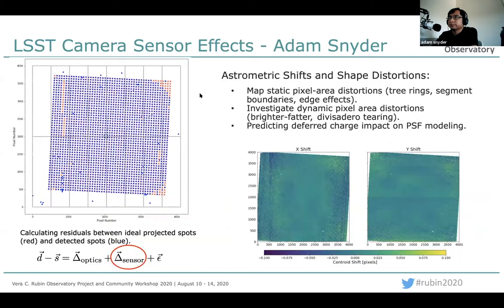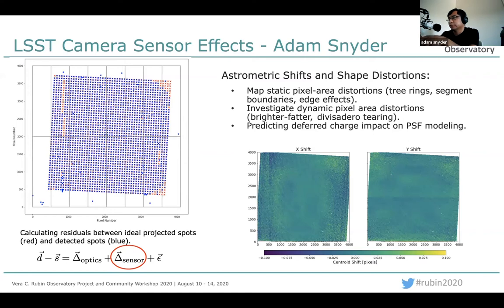Another sensor effect I've been working on is looking at astrometric shifts and distortions of images of fake stars projected onto the focal plane. By matching the ideal projected image with what's detected using the DM stack software, you can disentangle the residuals into an optical component due to the projector optics and a component caused by the sensor. By taking many dithers depending on spot illumination location, you can create maps of astrometric shifts, starting to see features such as tree rings and the midline break.